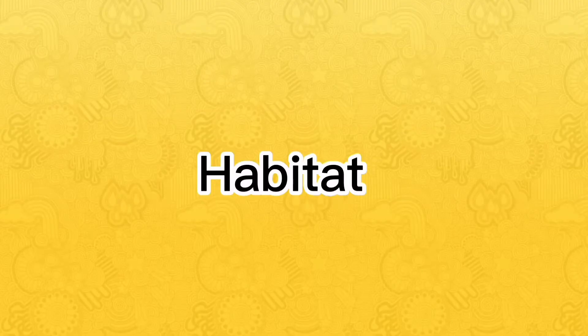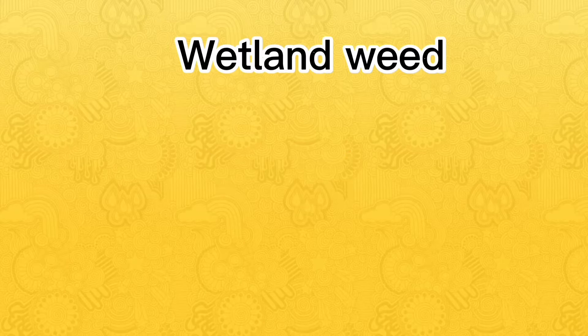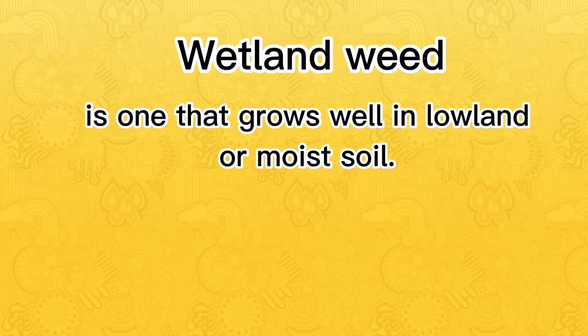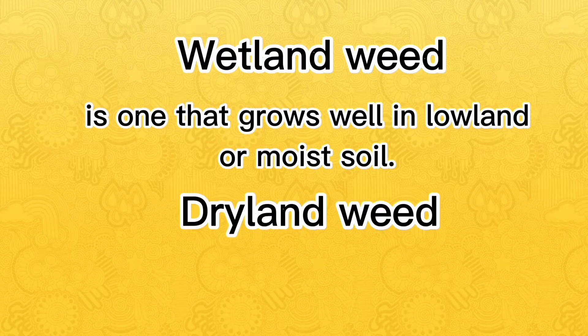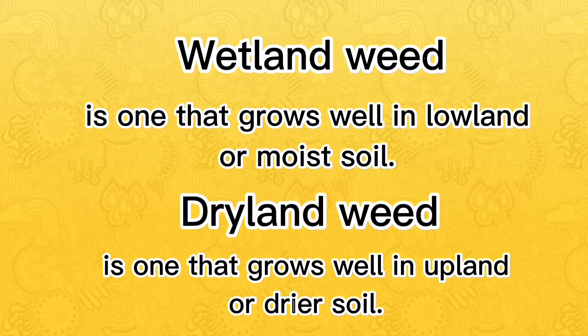Habitat. Weeds can be classified based on habitat or preferred place of growth. Wetland weed is one that grows well in lowland or moist soil. Dryland weed is one that grows well in upland or drier soil.